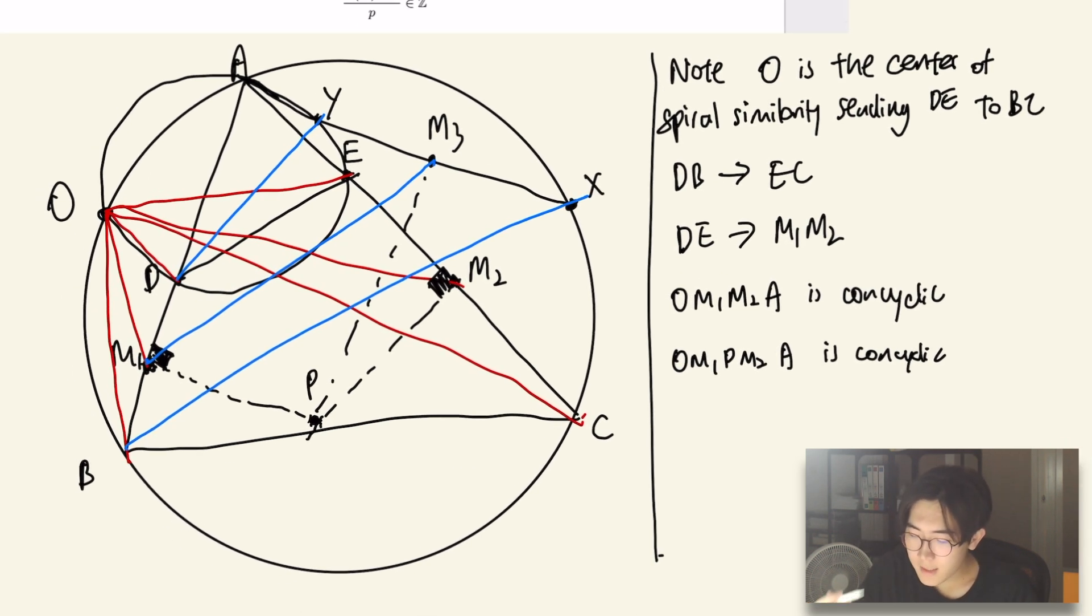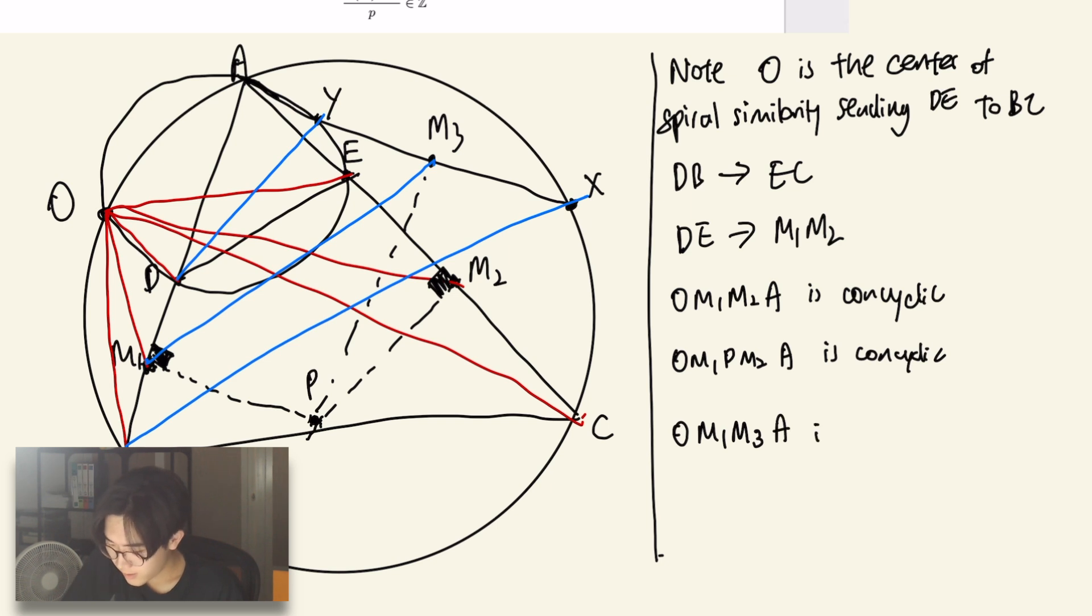Then using the similar logic, it means that O, M1, M3, A is cyclic, which basically means that M3 lies on the circle O, M1, P, M2, A.